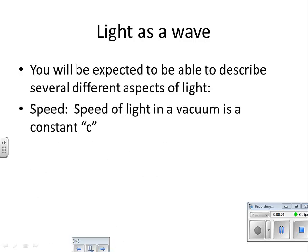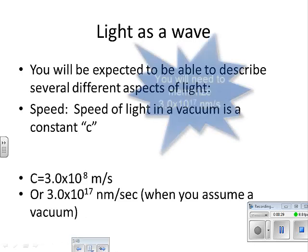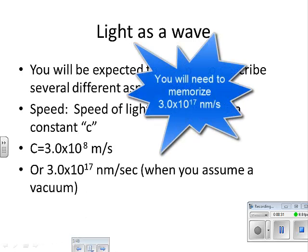The first of those is going to be speed. Now when we're talking about speed in light, we're talking about speed in a vacuum and it happens to be a constant. And we use the letter C to indicate that constant.